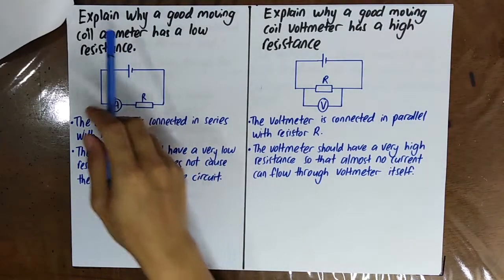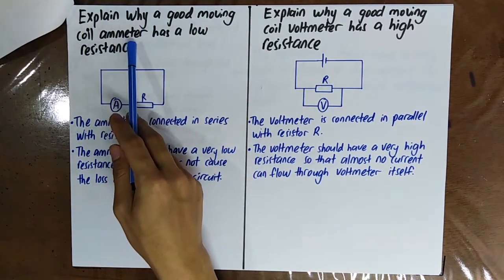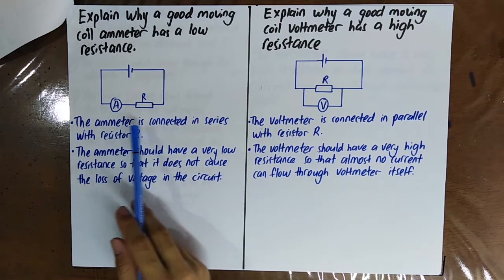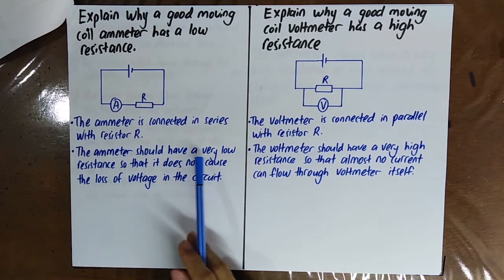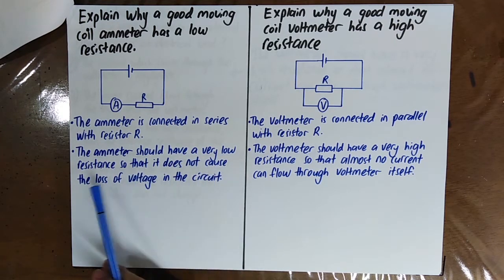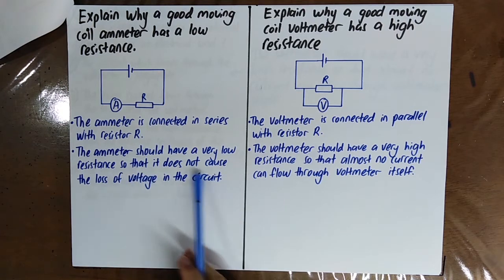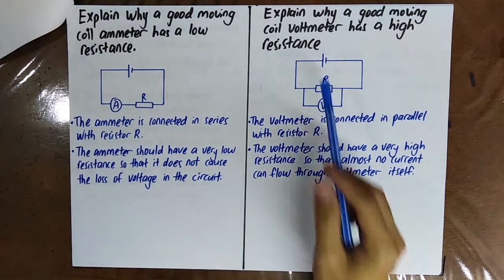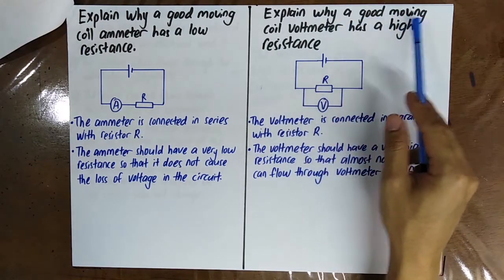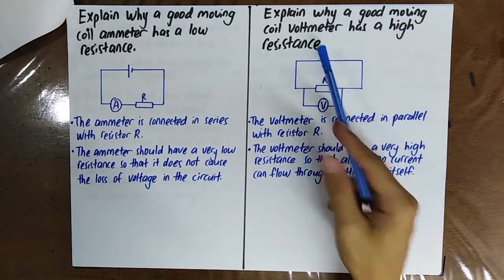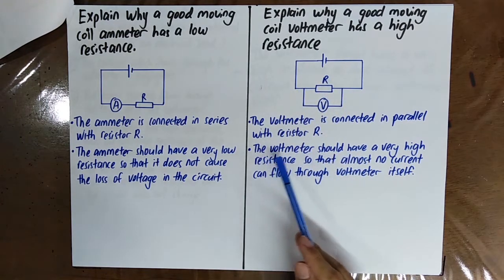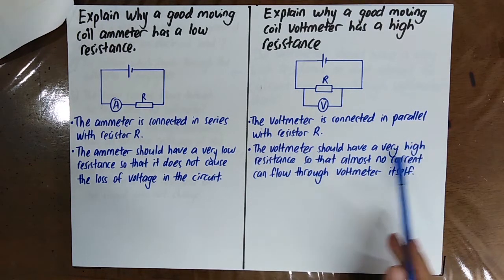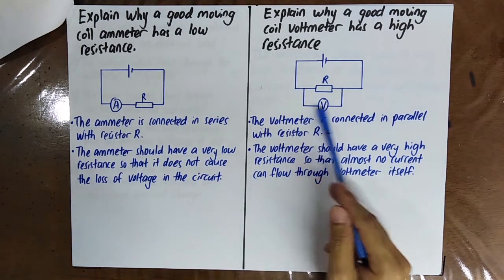Please explain why a good ammeter has a low resistance. The ammeter is connected in series, and therefore the ammeter should have a very low resistance so that almost no current flows to the voltmeter itself.